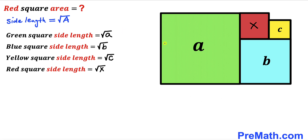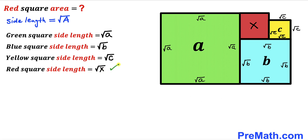Since all sides of a square are equal, the green square has side length √a on all sides, the blue square has side length √b on all sides, the yellow square has side length √c on all sides, and the red square has side length √x on all sides.